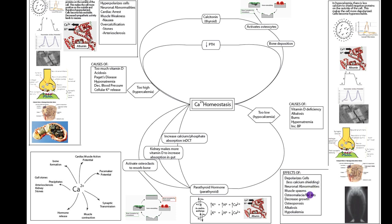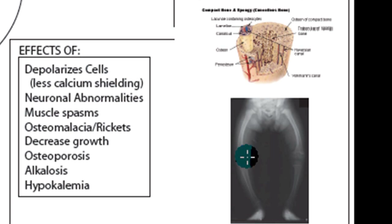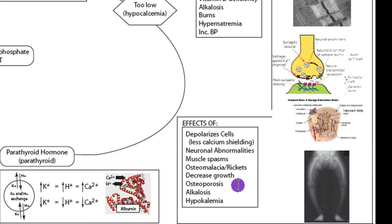In osteomalacia, decreased calcium can cause the bones to become soft, and this can happen in adults — adult bones can become soft. In rickets, it's the growth plate that becomes soft and expands, causing knocked knees. Osteomalacia is the bowing of the femur; rickets is the expansion of the growth plate, and that can only occur in kids because only kids have growth plates. In adults, lack of calcium can lead to osteoporosis. Also, a decrease in calcium means hydrogen has to bind to albumin now, causing alkalosis because that hydrogen is bound up by albumin. This can also lead to hypokalemia because decreasing the amount of H decreases the amount of potassium.